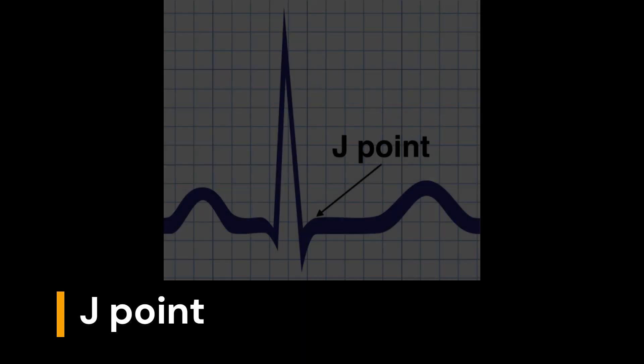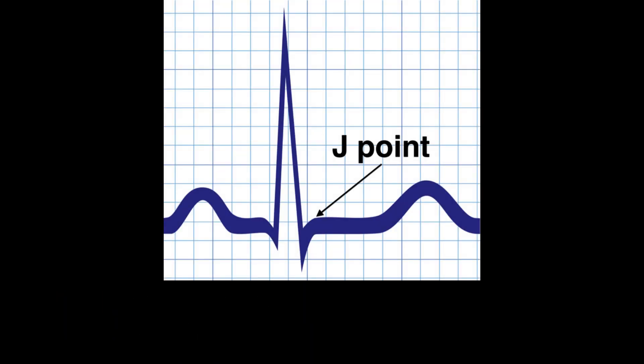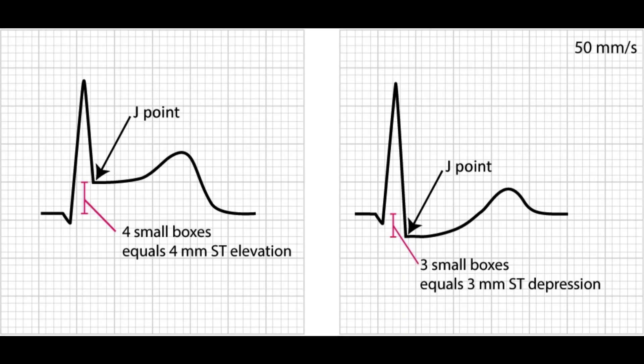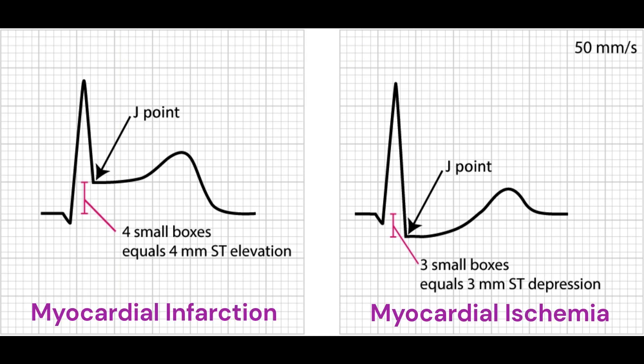The S wave goes back to the isoelectric line or the baseline at an important ending point called the J-point. The J-point is the intersection of the end of the QRS complex with the beginning of the ST segment. The J-point is an important point that is analyzed in myocardial infarctions and ischemias, as shown in this illustration.